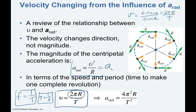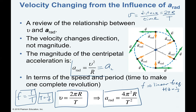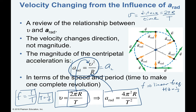We can substitute speed = 2πr/T into the centripetal acceleration equation v²/r to get a new expression for radial acceleration in terms of period. We take that speed squared, replace it with (2πr/T)², divide by the radius, and end up with an equivalent equation for radial acceleration that eliminates velocity.